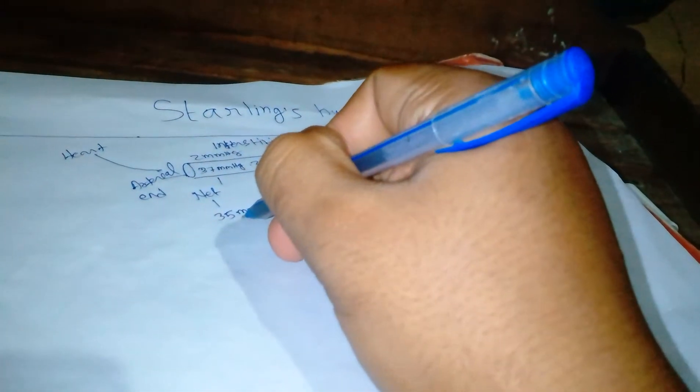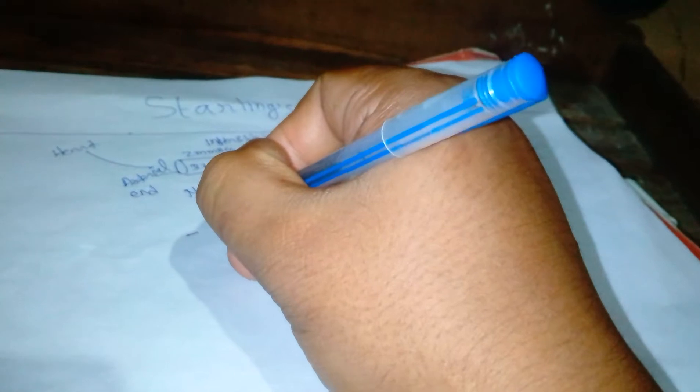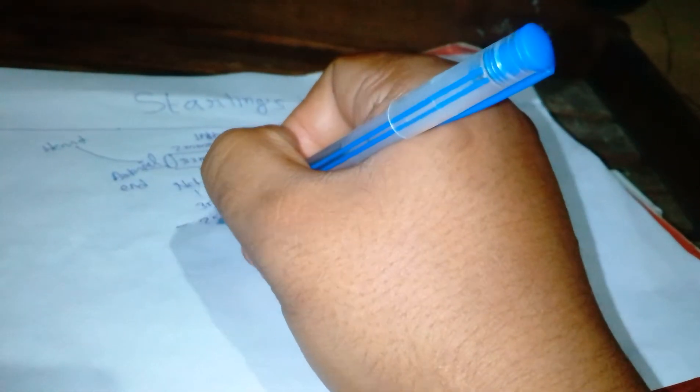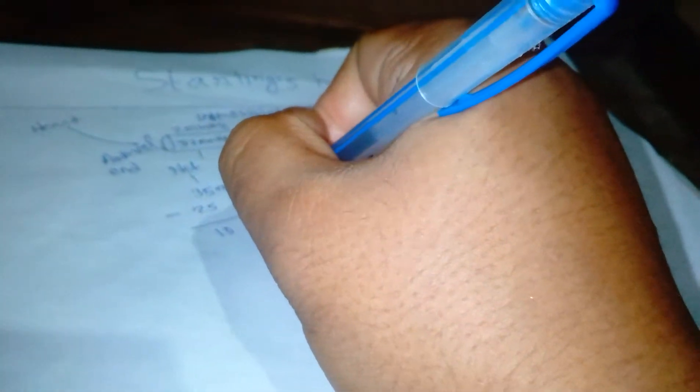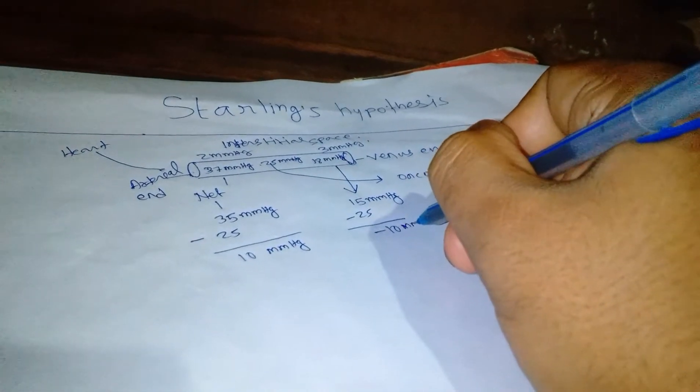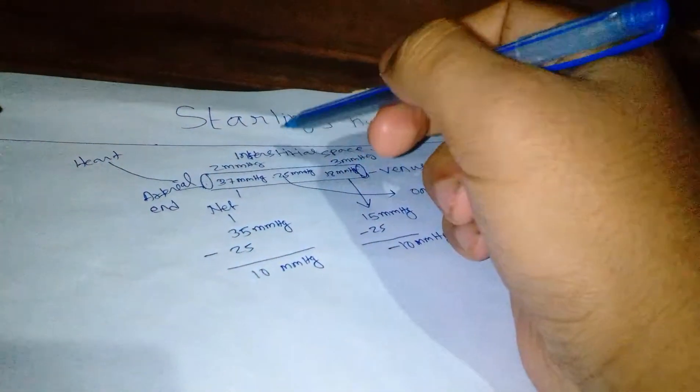Now according to the formula, if we minus the oncotic pressure that is 25 from here and also 25 from here, the result will be 10 mmHg here and 10 mmHg here.